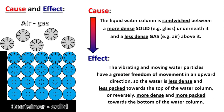Cause and effect. Cause: the liquid water column is sandwiched between a more dense solid, for example glass, underneath it, and a less dense gas, for example air, above it. Effect: the vibrating and moving water particles have a greater freedom of movement in an upward direction, so the water is less dense and less packed towards the top of the water column, or reversely, more dense and more packed towards the bottom of the column.